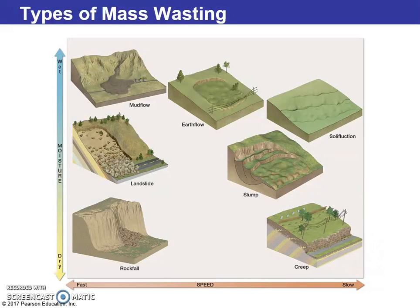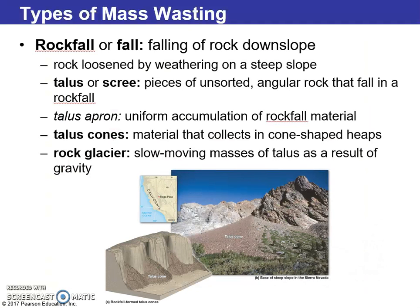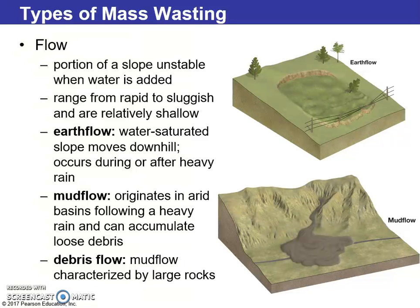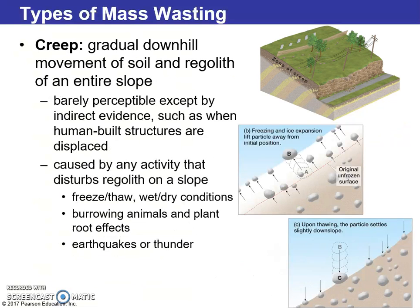Here we see a range of mass wasting examples: mudslides, earthflow, soil flection, landslide, slumping and falling down, and rockfall just off the edge, and creep. Rockfall is rock falling downslope. A landslide involves slide movement of land with one of the slippery substances or compositions we discussed. Rock avalanches usually occur on ice or moisture. Slump is a collapsing slide. Flow types include earthflow, mudflow, and debris flow. Creep is gradual downhill movement of soil and regolith across an entire slope.